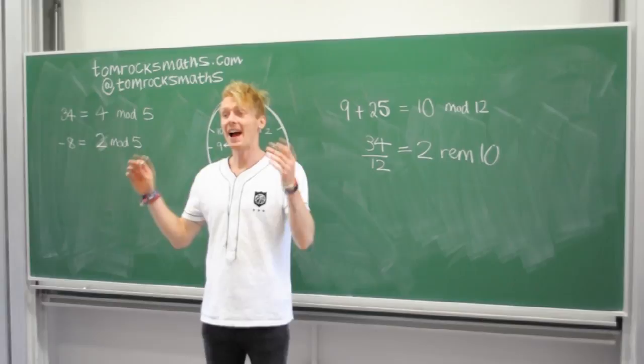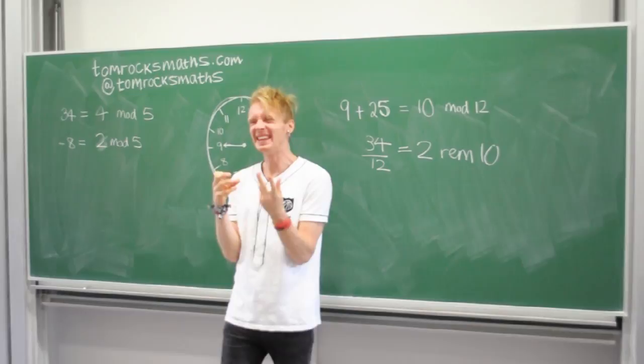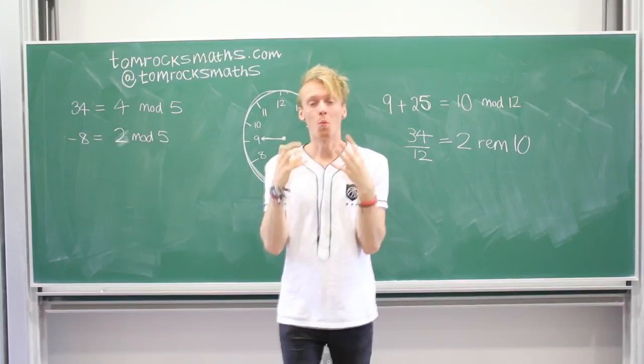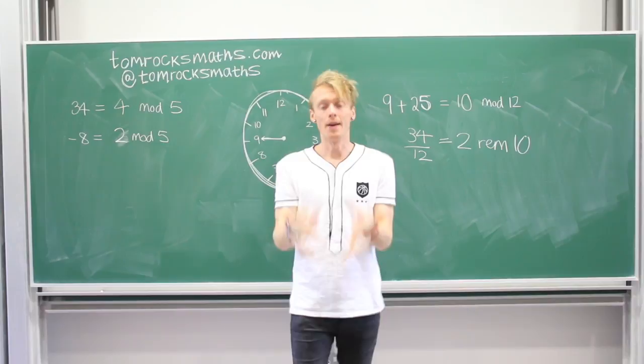And that's pretty much all there is to it. It's not really any harder than normal arithmetic taught at school or university. The operations of addition, subtraction, multiplication, and division all work exactly the same way. You do the normal operation to get your answer, then convert it into the correct form by dividing by your modular number and working out the remainder. It's really as simple as that.